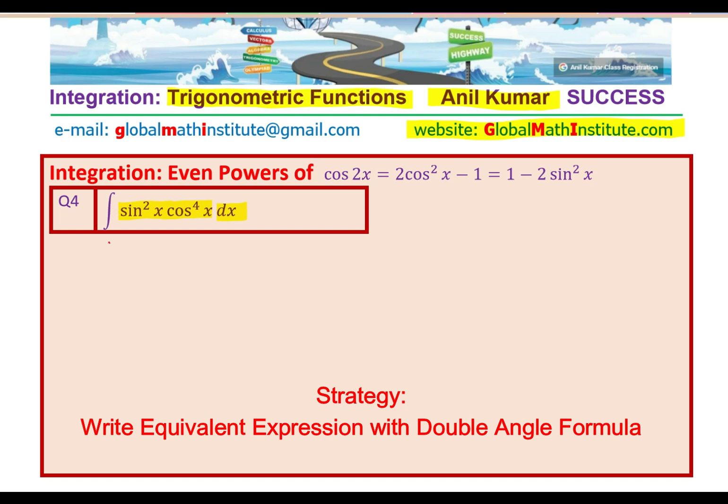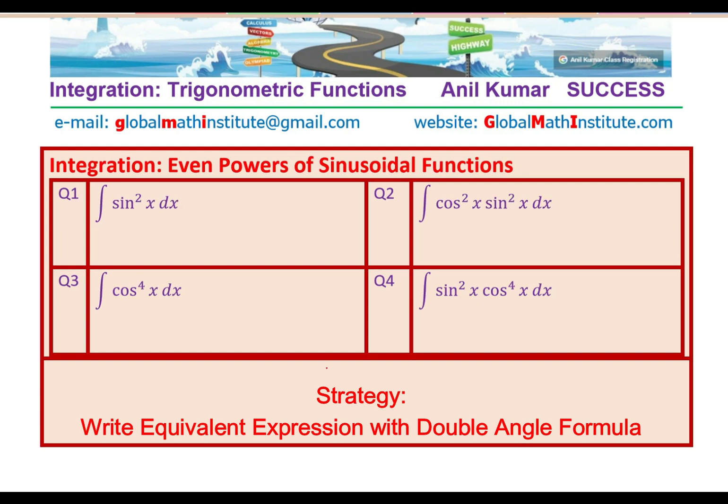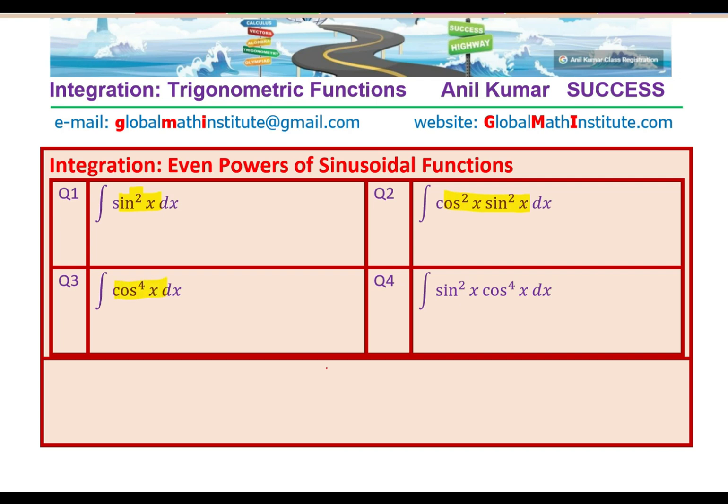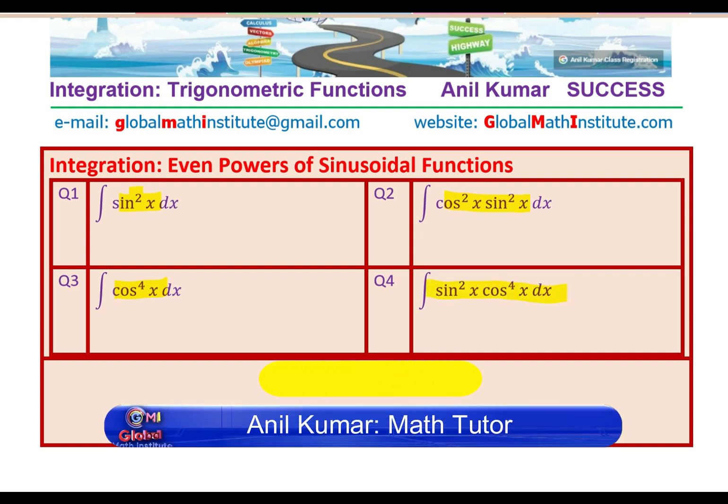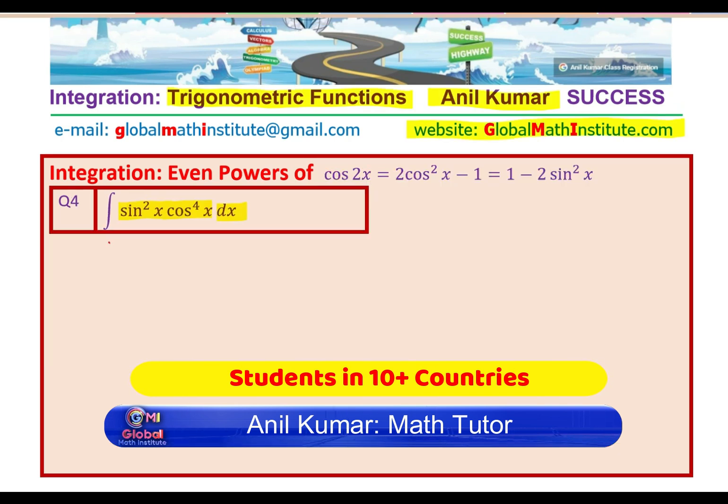Before this, we have already solved three integrals regarding even powers of sinusoidal functions which were sin²x, cos²x, and sin²x cos⁴x. I hope those solutions are absolutely clear and now we are going to take the fourth one which is integral of sin²x cos⁴x.